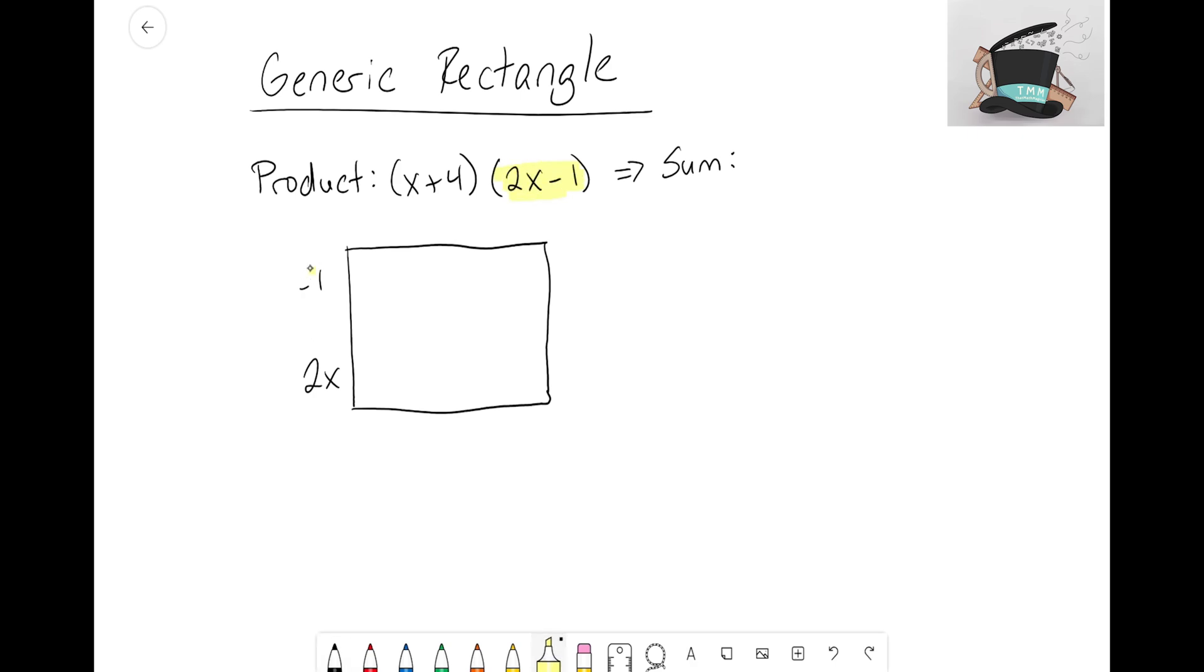As long as you're using the other one for the bottom, you're good. I'm going to write (x+4) for the bottom. Again, it doesn't matter which side you use, what's important is that you're not using the same one twice. Just like we did in our previous video, I want us to separate out the different terms.